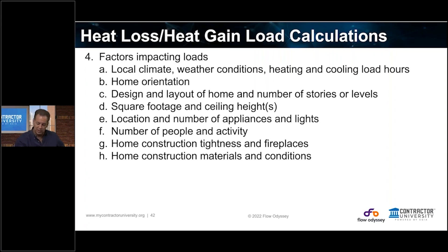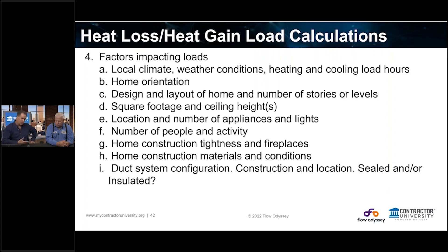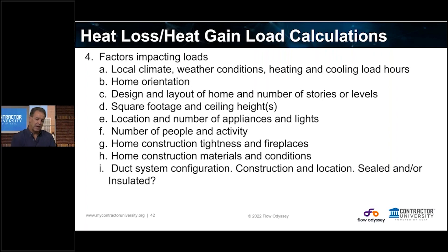Home structure tightness — it allows for infiltration and exfiltration. The home construction materials and the condition of those things matter. We talk about looking at an attic and saying maybe they have R-30 insulation there, but in some spots it dips down to three inches. What is the condition of the insulation? Is it relatively uniform? Use your best judgment. The duct system — what is the configuration? Where is it installed? Is it part of the conditioned space? If so, I can eliminate the duct loss and duct gain. If going ductless mini splits, I also remove duct loss and duct gain from the calculation.